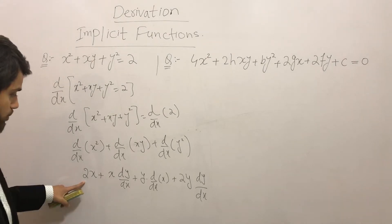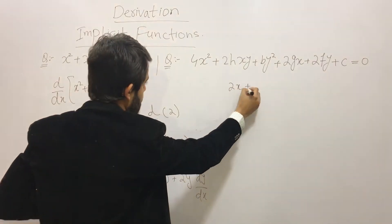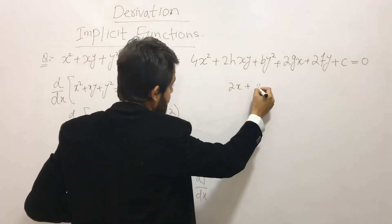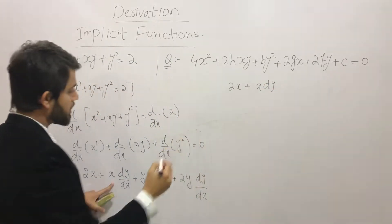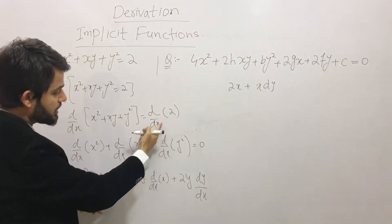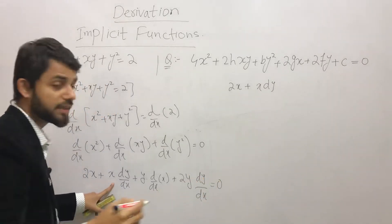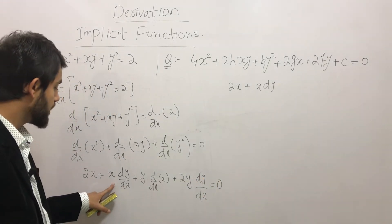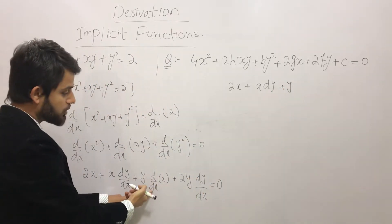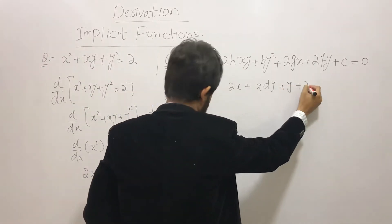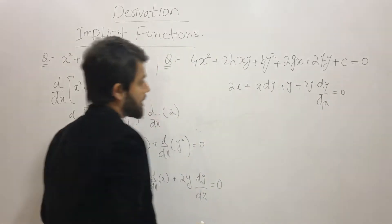Simplifying, we get: 2x + x·(dy/dx) + y·(1) + 2y·(dy/dx) = 0. Note that the derivative of the constant 2 on the right-hand side is 0, and the derivative of x with respect to x is 1.